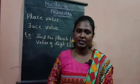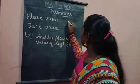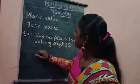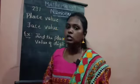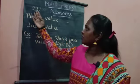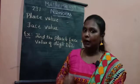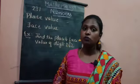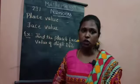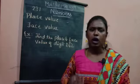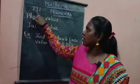For example, if I write 231, here we have three digits. One is in the place of ones, three is in the place of tens, and two is in the place of hundreds.